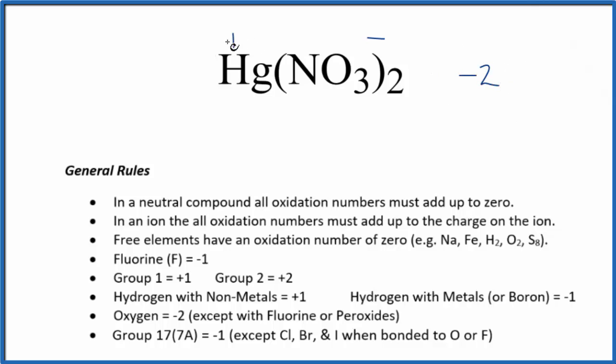That would mean the mercury would have to be a positive two. So the oxidation number on the mercury in this mercury two nitrate is positive two.